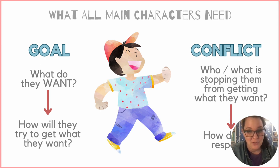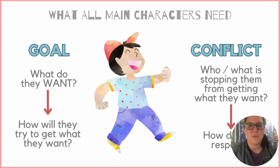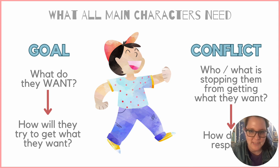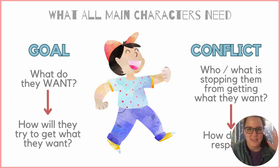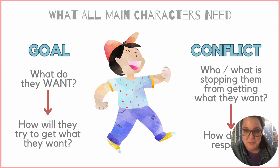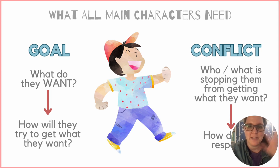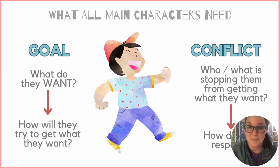The second thing that a main character needs is conflict. Who or what is stopping the main character from getting what they want, and how do they respond? Most stories have more than one conflict. You will see conflicts throughout the story — beginning, middle, and end. And that's what keeps our main character on their toes.